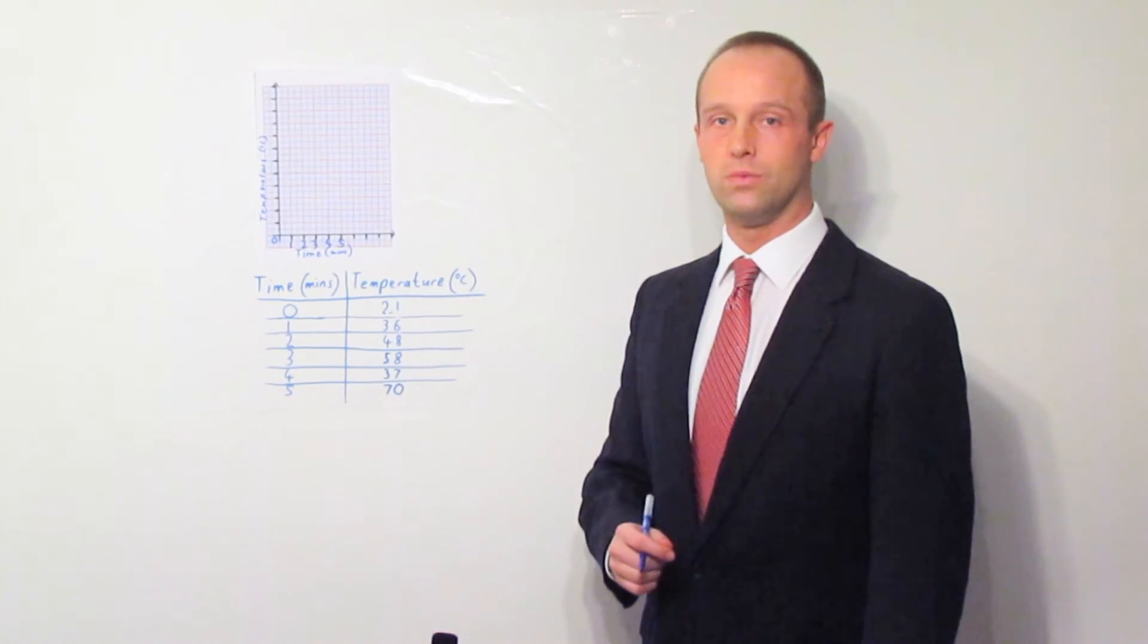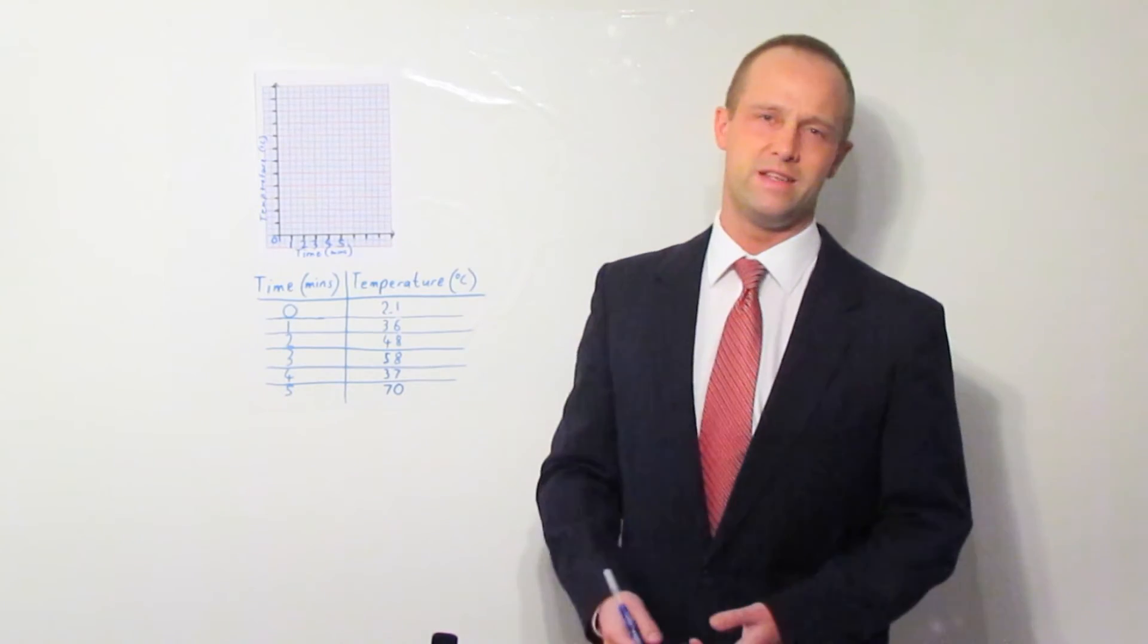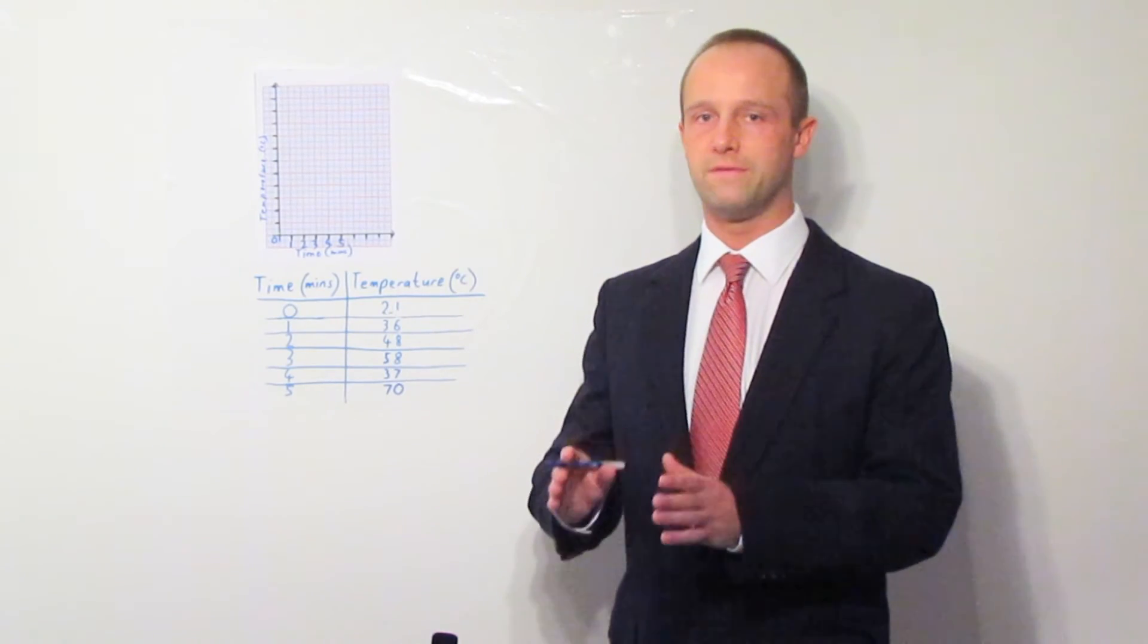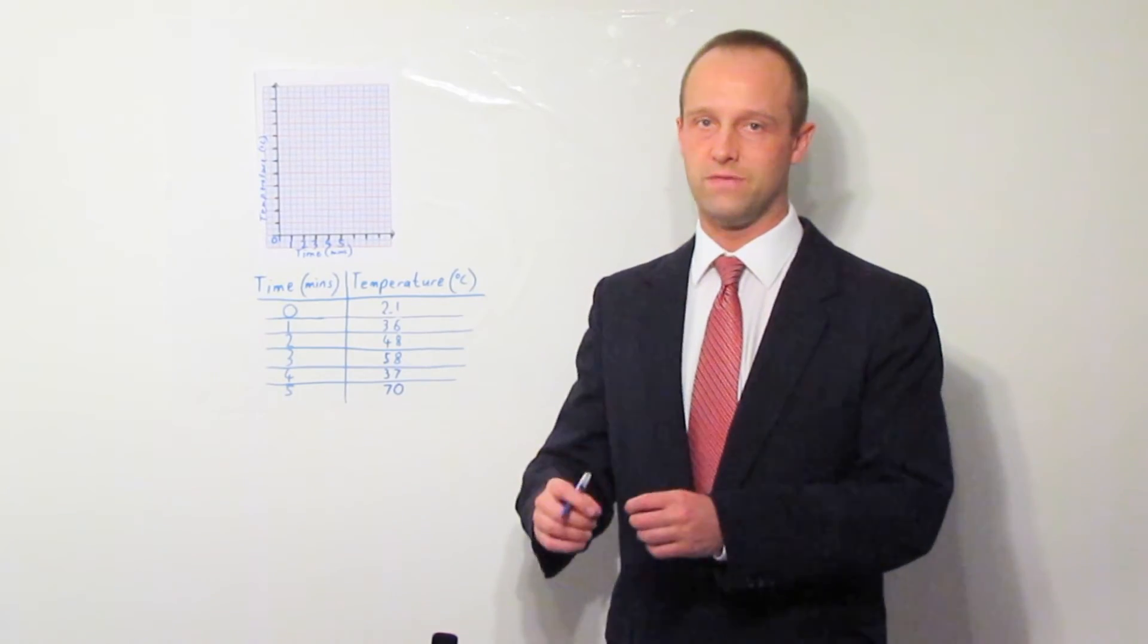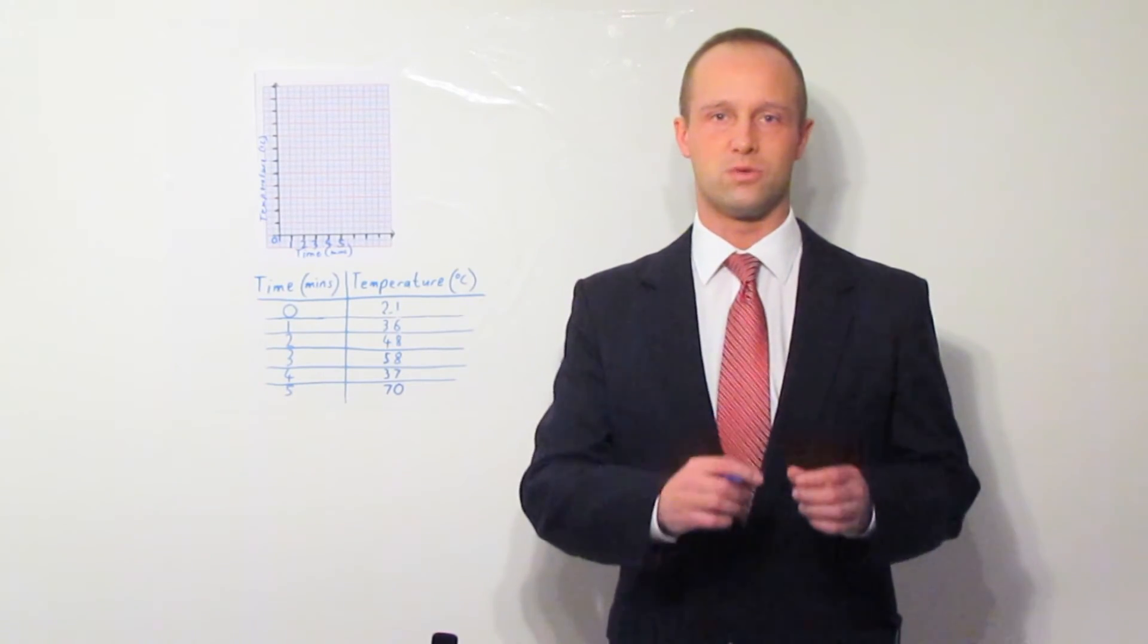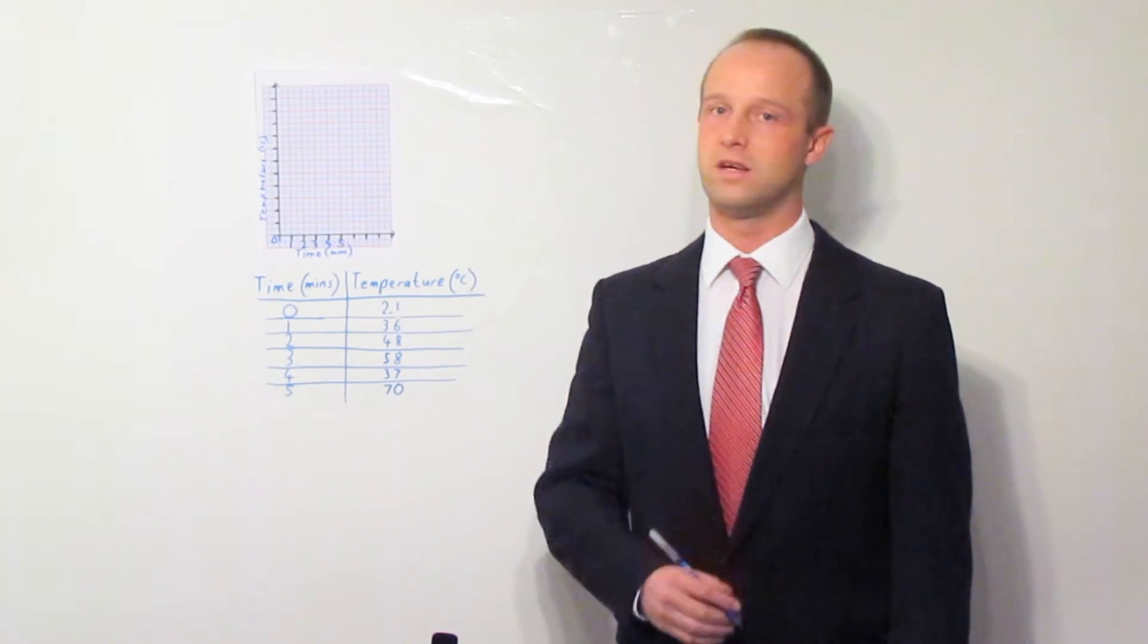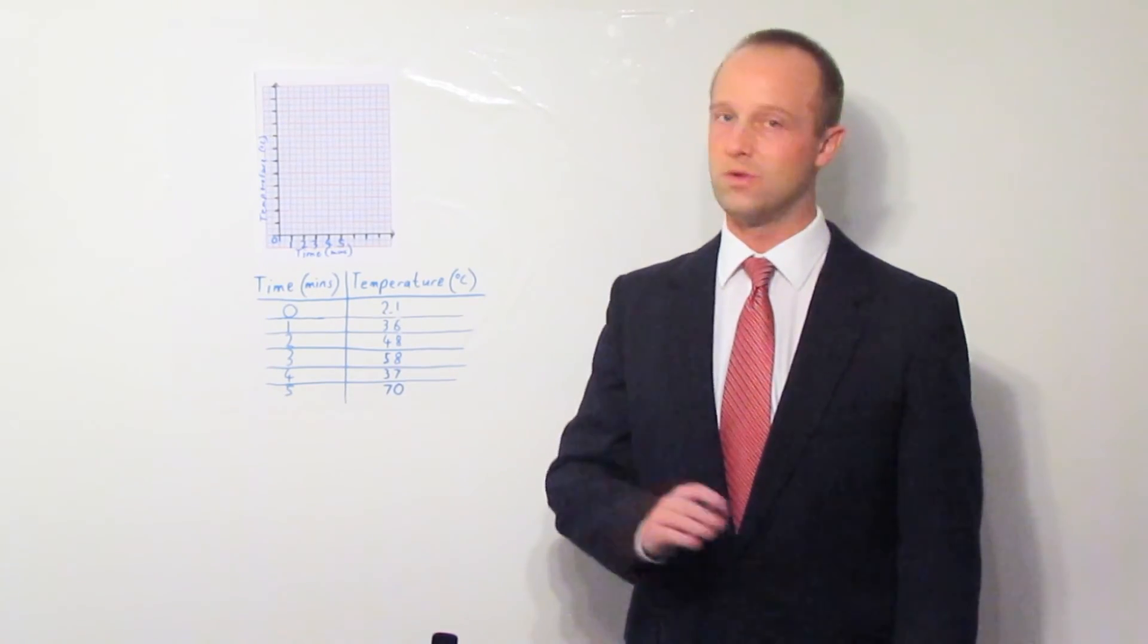If ones and twos don't work, the next thing you need to go for is fives. Don't be tempted to try going up in something like threes or four and a halves or sevens. It's going to make it extremely difficult for you to plot the points. Stick to ones, twos, fives. And if they don't work, tens, twenties, fifties. Or hundreds, two hundreds, five hundreds. Or thousands, two thousands, five thousands. Each time, start with a number that starts with a one, a two, or a five.